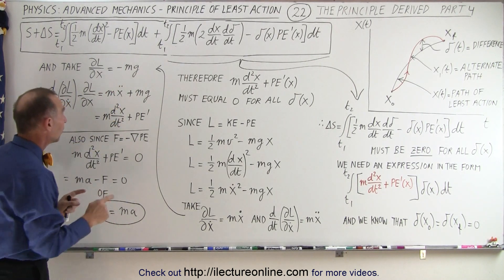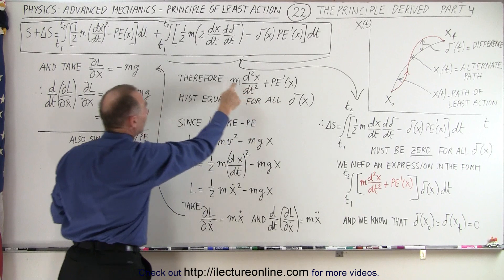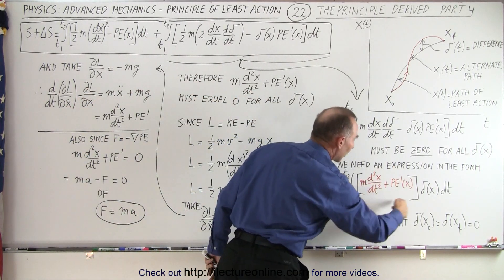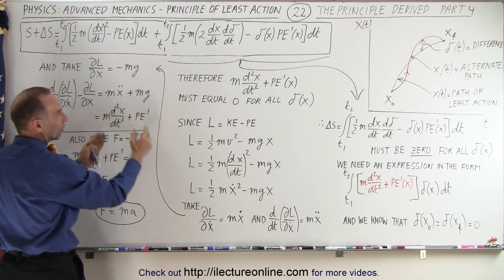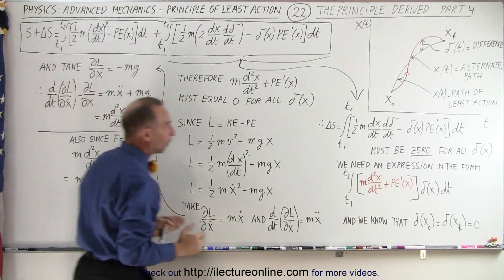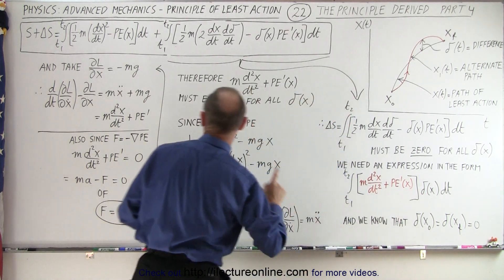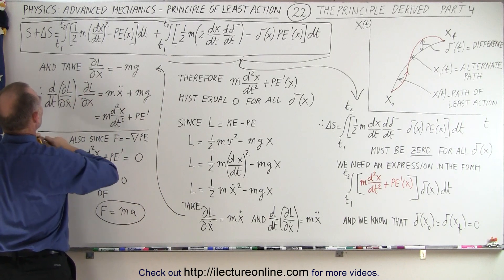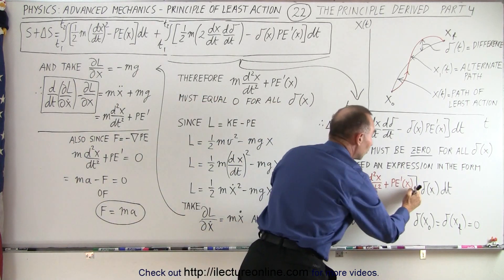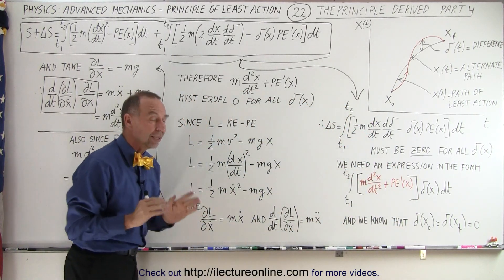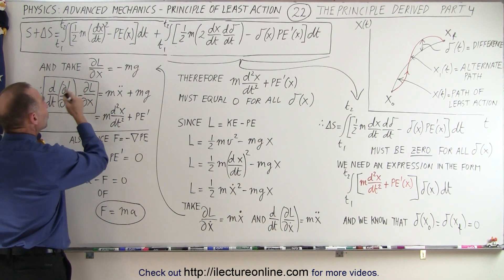Notice that m·x-double-dot can be written in this form, and mg is essentially the derivative of the potential energy. Therefore, this quantity can now be represented by our bracket expression. This is the exact same thing as what we had inside the brackets — which had to be zero for all values of delta x, for all alternate paths. In other words, this expression represents the path of least action when we set it equal to zero.